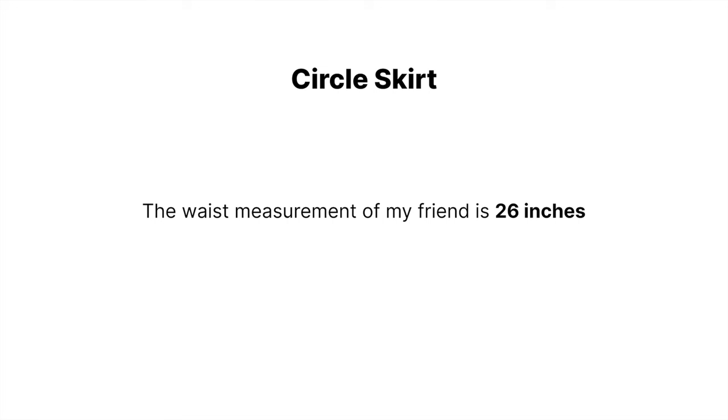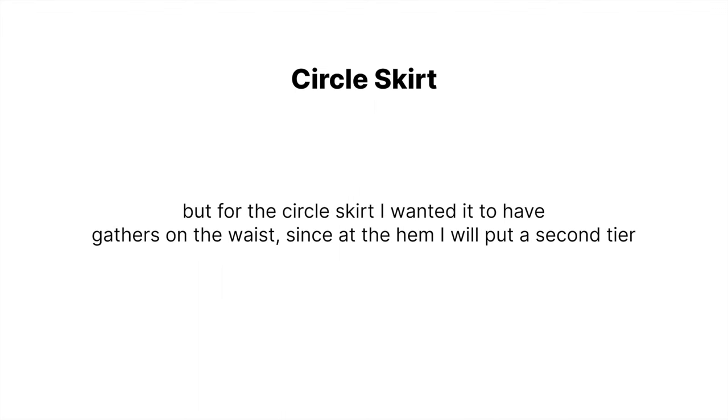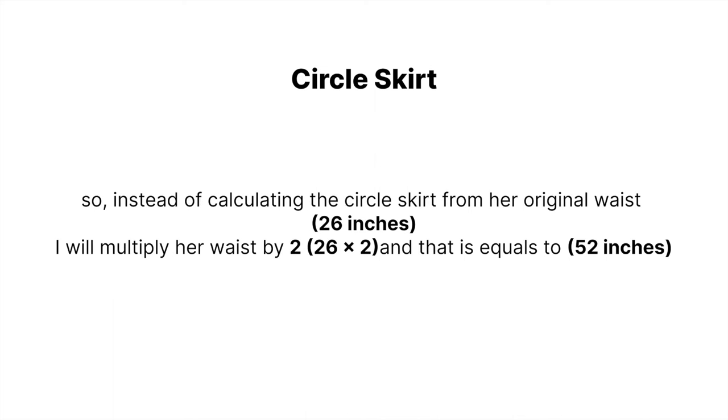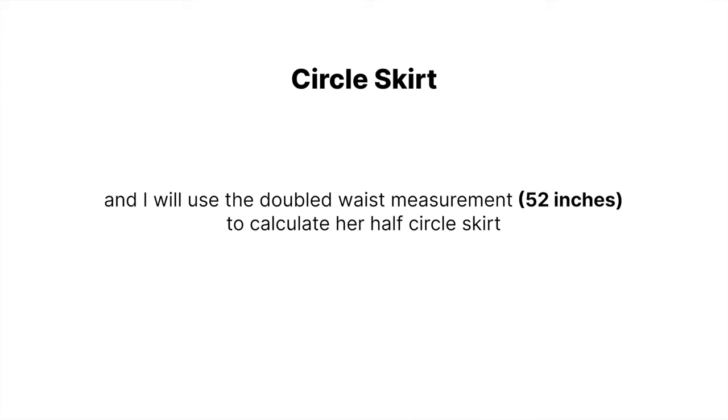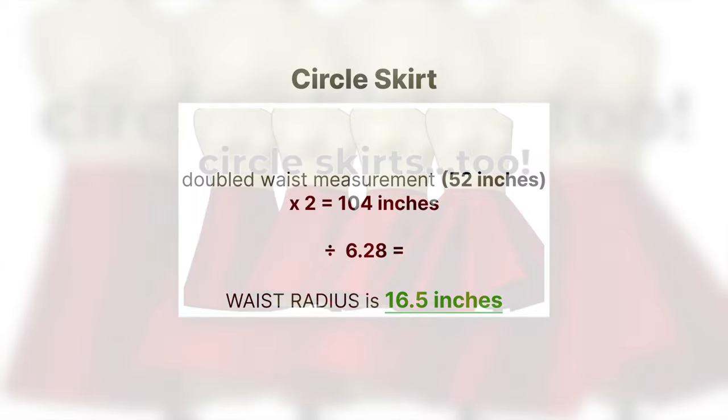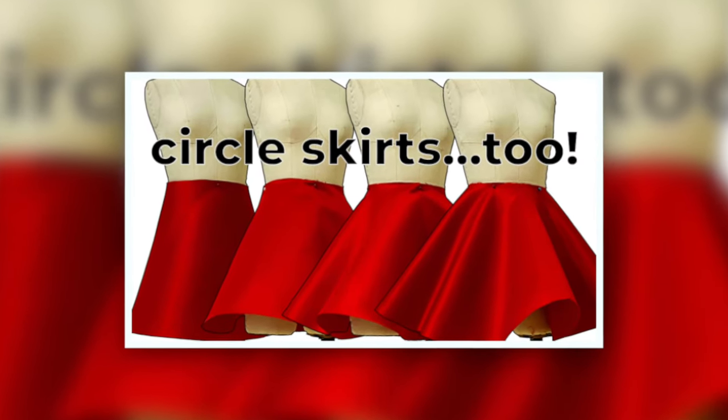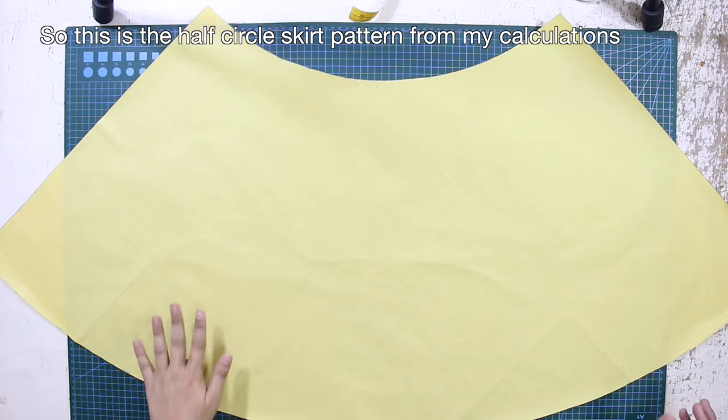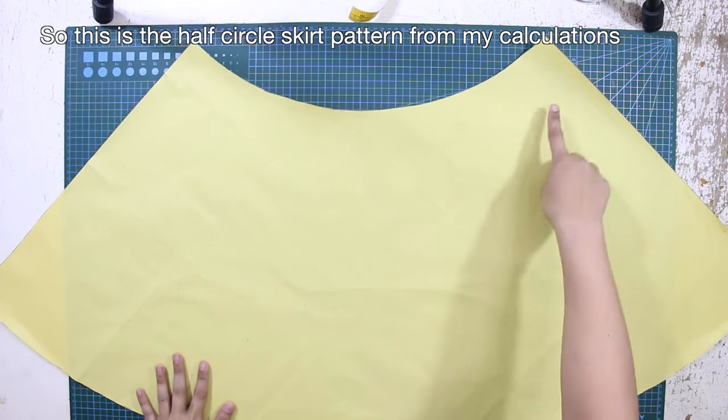The waist of my friend is 26 inches, but for the circle skirt I wanted it to have gathers on the waist since at the hem I will put a second tier. So instead of calculating the circle skirt from her original waist, I will multiply her waist by two, which equals 52 inches, and I will use the doubled waist measurement to calculate her half circle skirt. This is the half circle skirt pattern from my calculations.